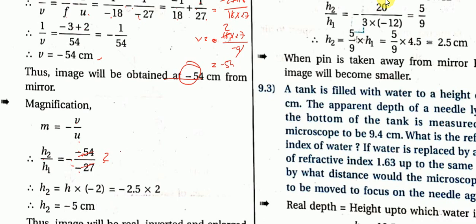Now I need H2. So H2 = M × H1. H1 is 2.5 cm. H2 equals minus 2 × 2.5. This means you get a large image — an enlarged image. When the object is between F and C, you get an image beyond C that is enlarged. As well as an inverted image.